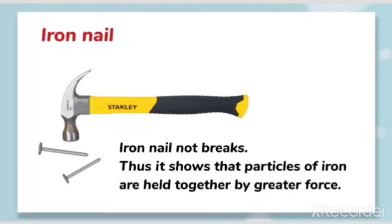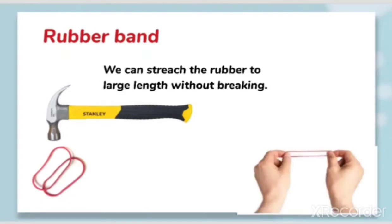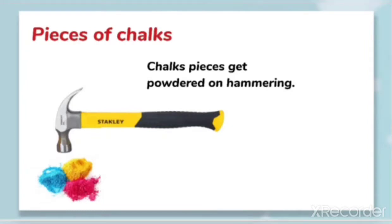Next, when we try with the rubber band and hammer it, we find that we can stretch the rubber to a larger length without breaking. This is due to the elastic property of the rubber band. Similarly, when we hammer the chalk pieces, we find that it breaks down into smaller pieces — we can get powder from it. The chalk pieces get powdered on hammering.